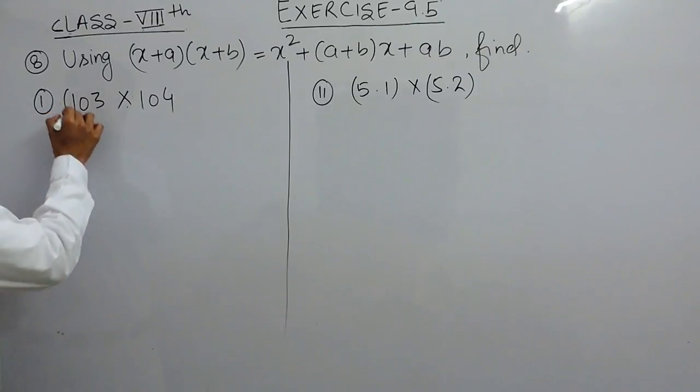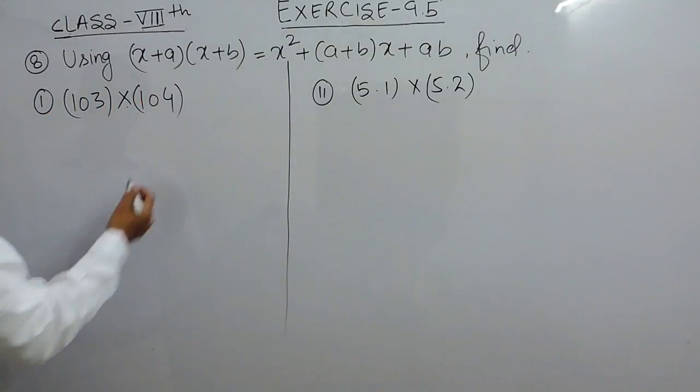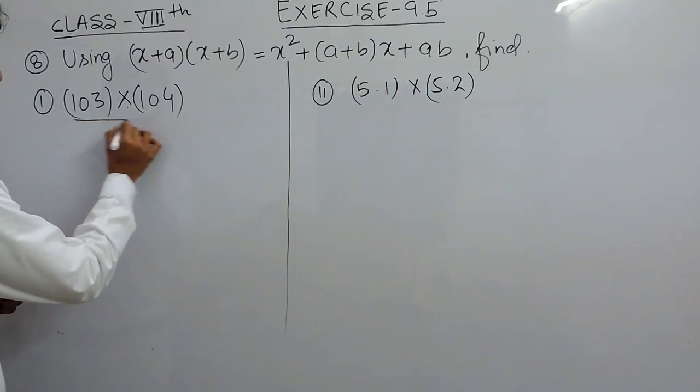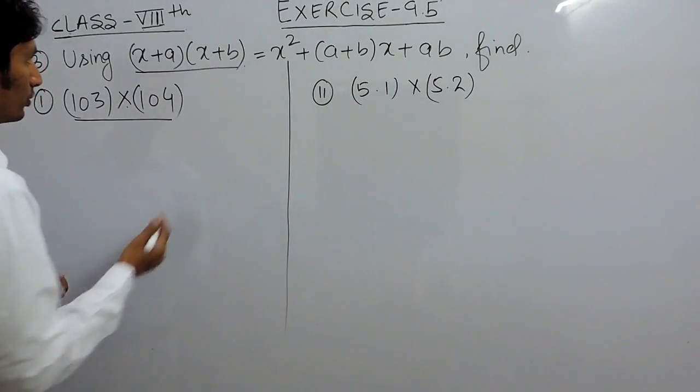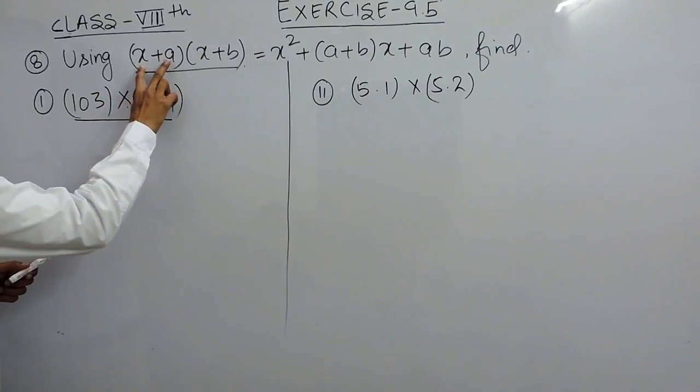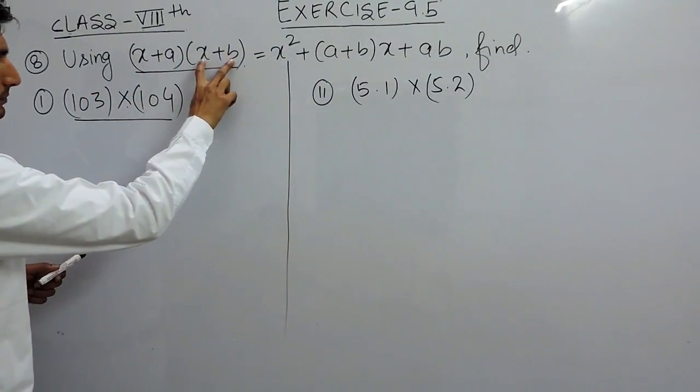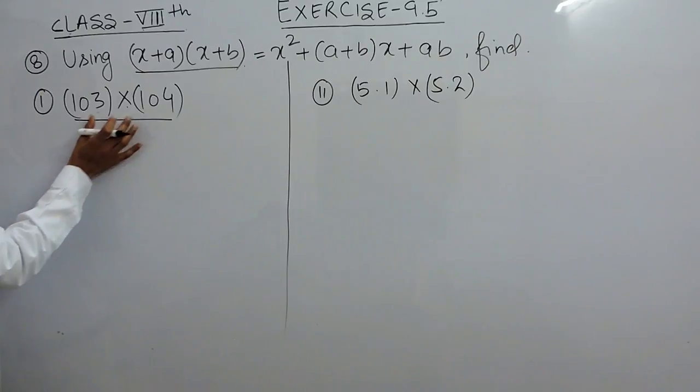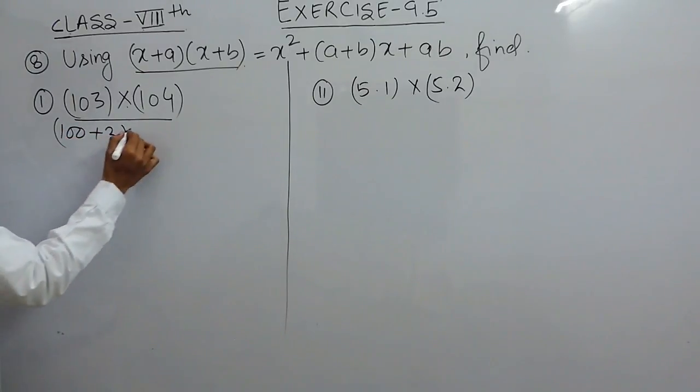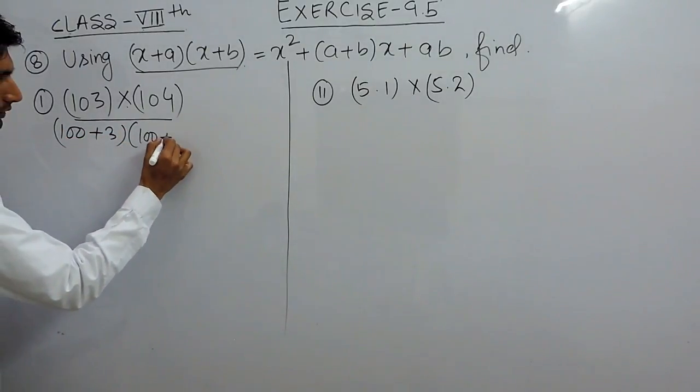First of all, this is 103 multiplied with 104 and this value is in this form. So, if I have to convert this into (x+a)(x+b), because these are close to 100, so it is better to write it 100 plus 3 and this is 100 plus 4.